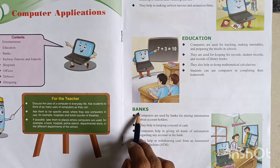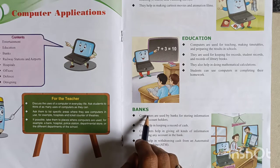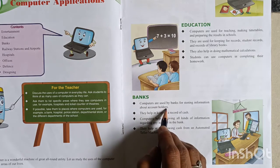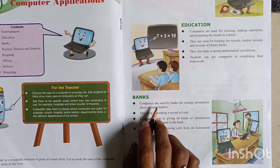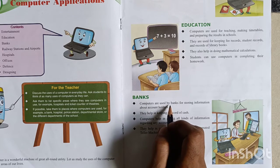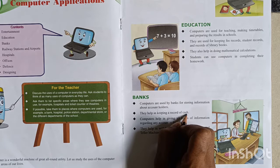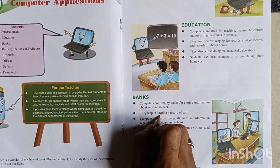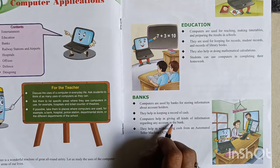Next is banks. Computers are used in banks. They are used for storing information about account holders — your parents have a bank account and all that account information can be stored on the computer. They help in keeping a record of cash and giving all kinds of information regarding any account.